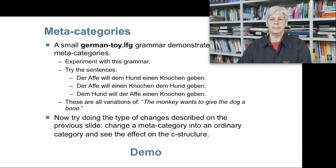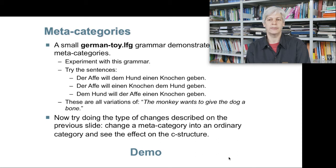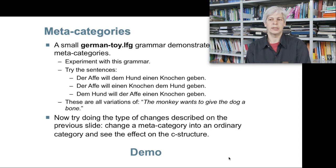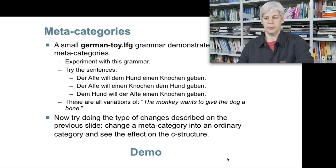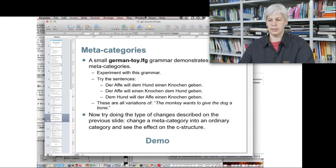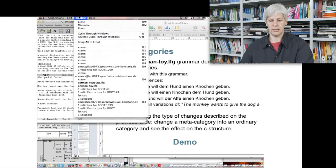I have a small toy grammar for German that demonstrates the use of meta-categories — it's available to you. You can try sentences such as 'Der Affe will dem Hund ein Knochen geben' and variations — all meaning 'the monkey wants to give the dog a bone'. Let me demo this now so you can see it. We'll load the German toy grammar and create a parser.